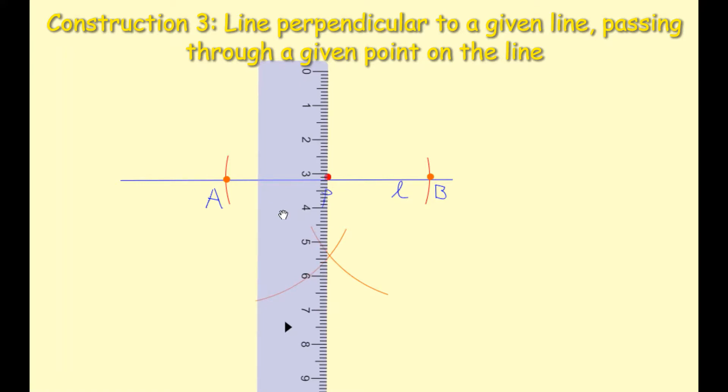I'm going to draw a straight line through the point P where it meets the point where my two arcs intersected. So with my pencil now I'm going to draw a straight line through P through the point where my two arcs intersected, and that is basically the construction finished.